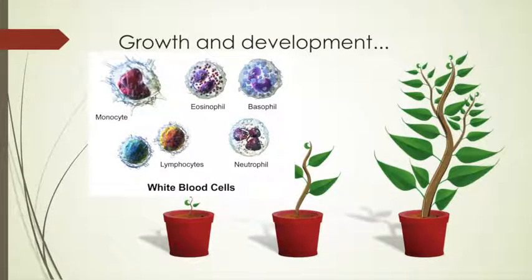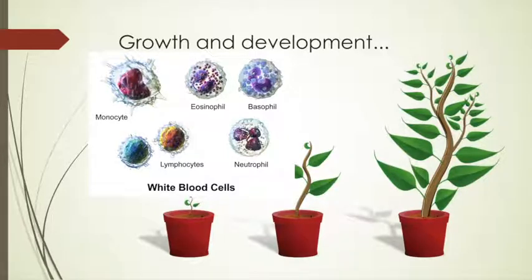Growth and development refers to when an organism has to develop — it has to grow in size and in number. Just like the plant that we have over here: it starts with just a little plant, and as it matures, it keeps developing and growing into an adult plant. All organisms, no matter how many cells they have, have to be born and have to develop.